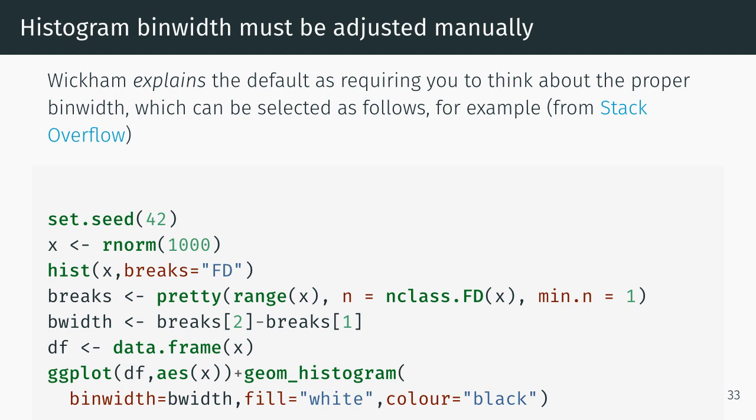Histogram bin width does have to be adjusted manually. Wickham explained, using the term loosely, the default is requiring you to think about the proper bin width. For example, this is from Stack Overflow. You don't need to know the details, simply that bin width has been selected here based on some options to the hist function and pretty function that make it conform to the particular data, which is 1,000 randomly normally distributed points. The idea is you have to have some method of choosing the bin width; you can't leave it to the default.